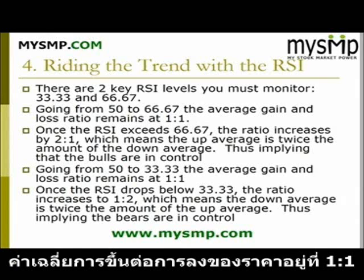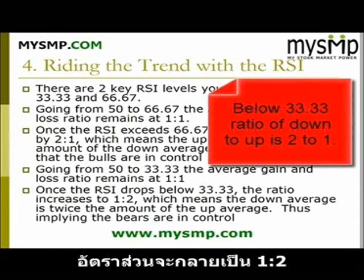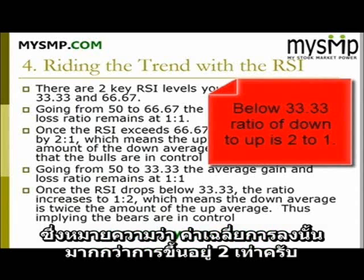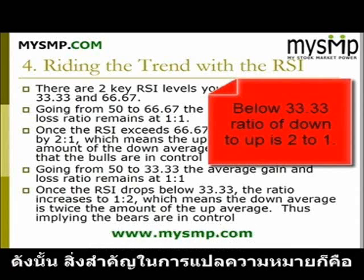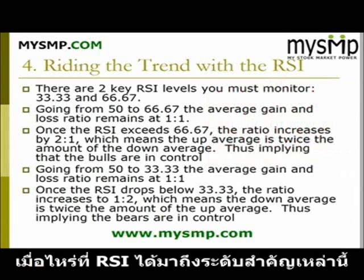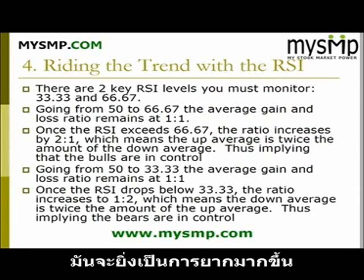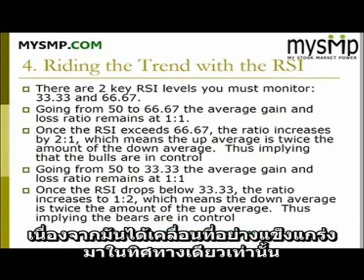The key measure here is that once these thresholds are exceeded, it is the average gain and loss ratio that matters. It becomes even harder to increase or decrease the value of the RSI because it is moving so strongly in one direction.